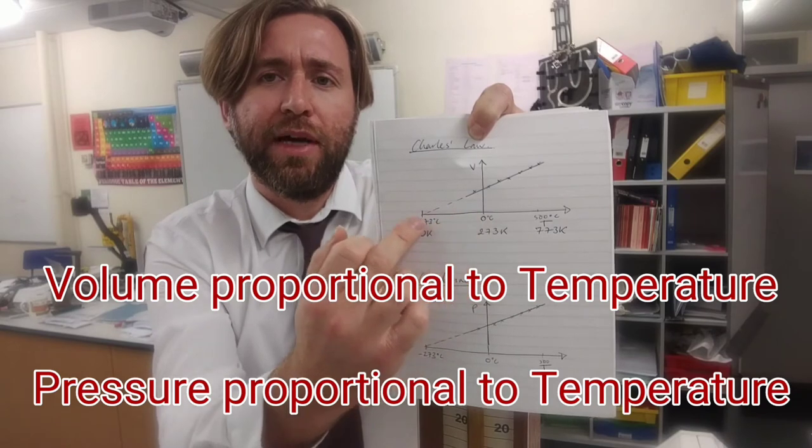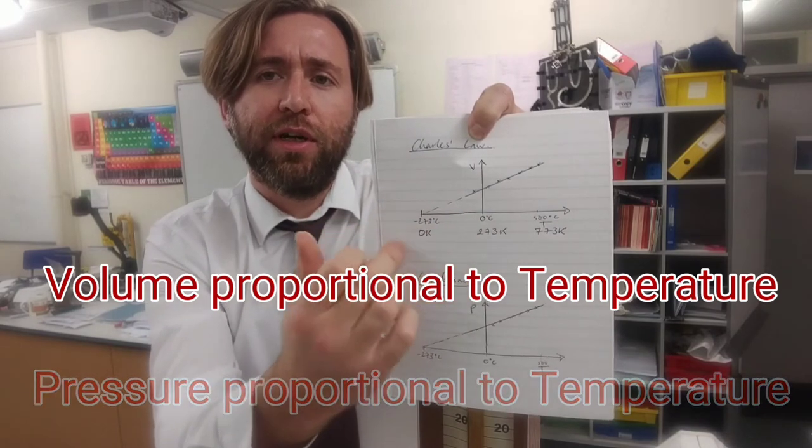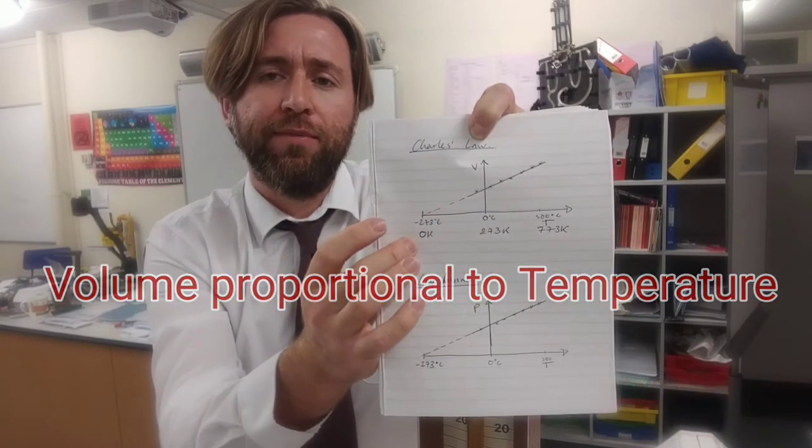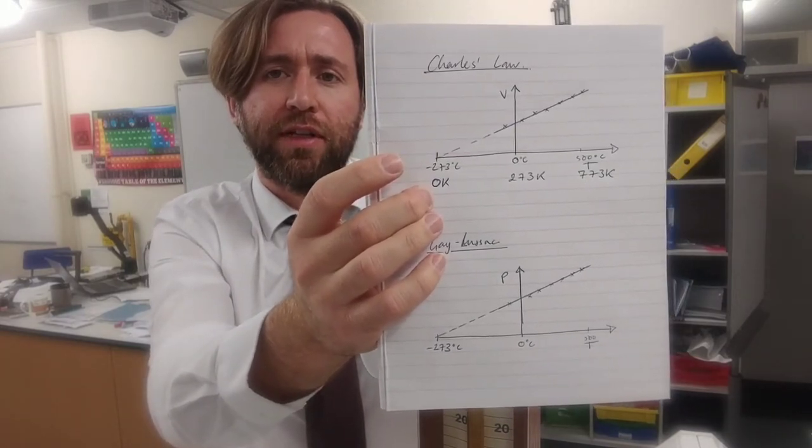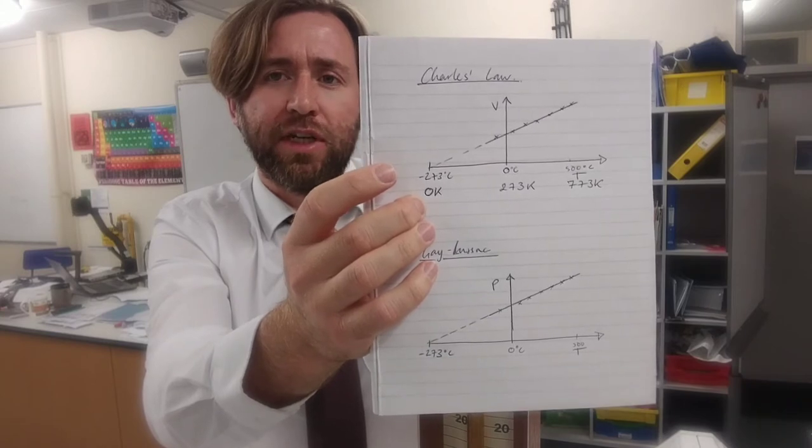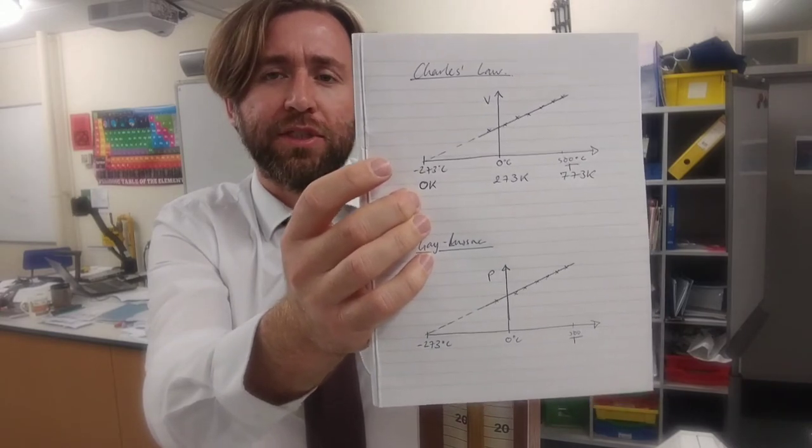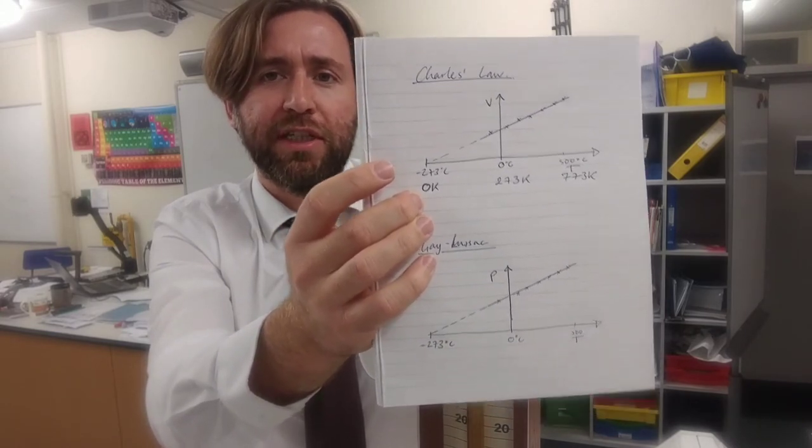So by extrapolating back to the x-axis we can work out what 0 temperature would be. And we'd say that 0 temperature is 0 degrees Kelvin. And 0 degrees Kelvin is absolute 0 which is minus 273 degrees Celsius.